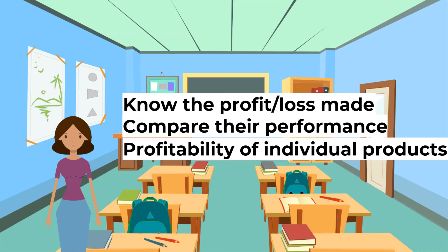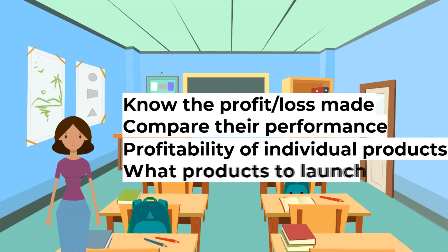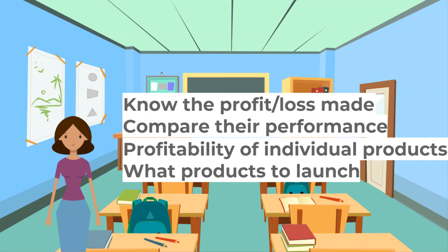Income statements help managers know the profitability of individual products. By preparing a separate income statement for each product, they may decide to stop the production of products that are making losses. They also help decide what products to launch — by preparing a forecast income statement for the first few years, whichever product is forecast to have a higher profit is the one the business will choose to launch.